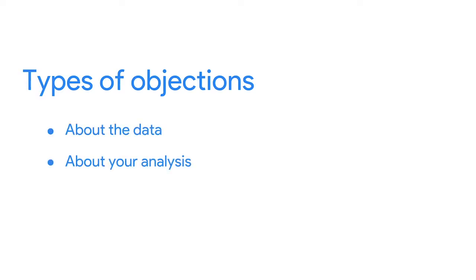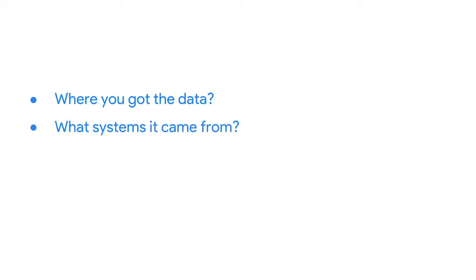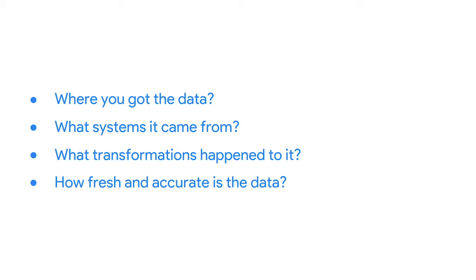Sometimes your audience might raise objections to the data before and after your presentation. Objections about the data could mean a few different things. Stakeholders might be asking where you got the data and what systems it came from, what transformations happened to it before you worked with it, or how fresh and accurate your data is. You can include all this information at the beginning of your presentation to set up the data context, and add a more detailed breakdown in your appendix. When cleaning data, keeping a detailed log of data transformations is useful — that log can help you answer these questions.